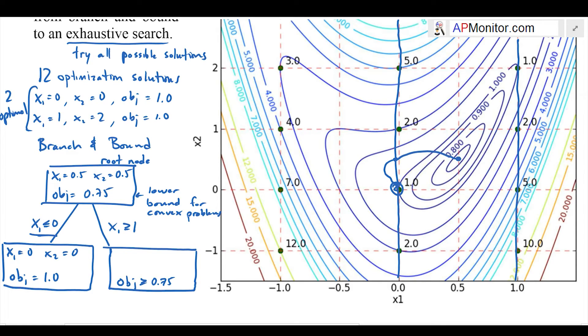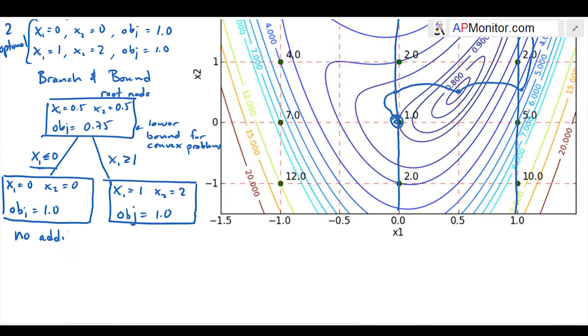For the greater than branch, I know I'm going to have an objective greater than 0.75. It's going to be x1 equals 1, x2 equals 2, and the objective function is equal to 1. There's no additional branching required because both of those branches came up with integer solutions.